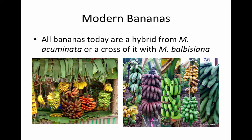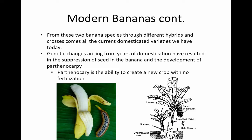Modern bananas today are all hybrids from acuminata, or a cross between acuminata and balbisiana banana varieties. From these two banana species we have different hybrids and crosses, and from that we get all the bananas in our supermarkets today. Genetic changes arising from years of domestication have resulted in the suppression of seeds in the banana and the development of parthenocarpy — the ability to create a new crop with no need for fertilization.